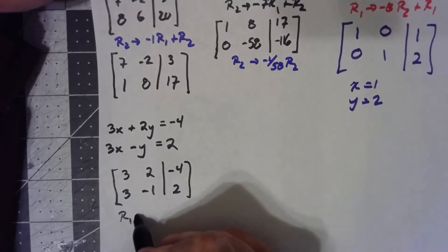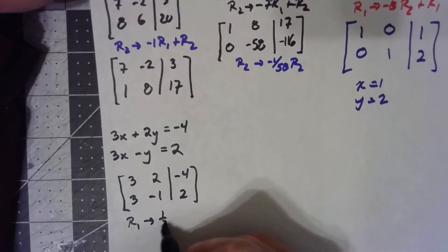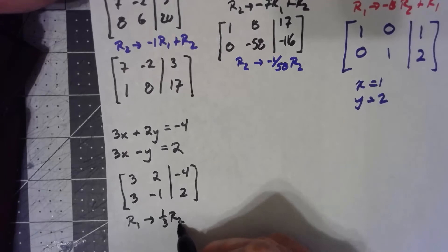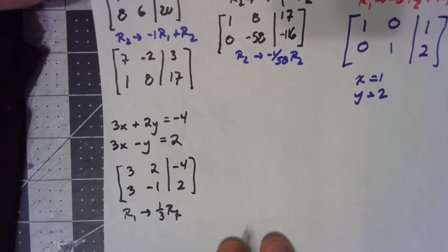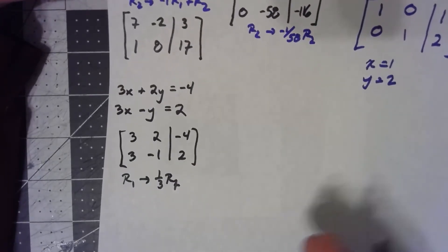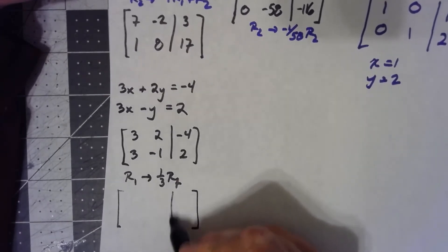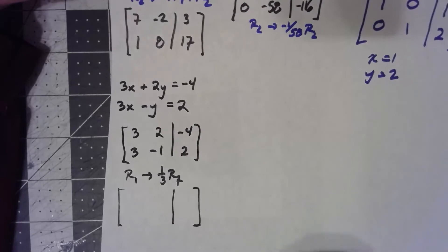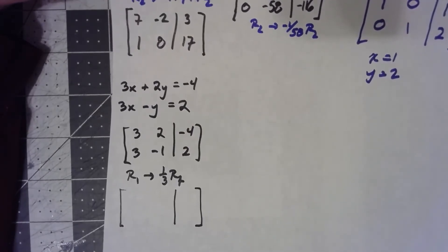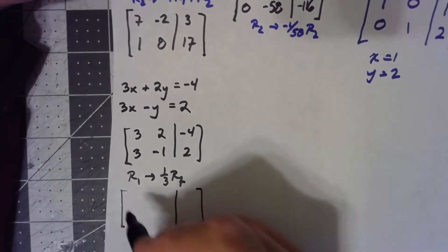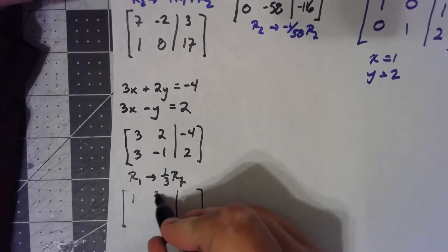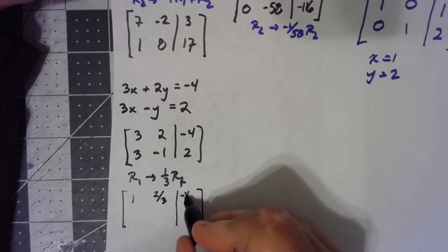And then to get that 1 in the upper left, I'll just go ahead and say row 1 is 1/3rd row 1. I don't like doing this if I can avoid it, which is why I always try to. But this does always work. No matter what, multiplying by the reciprocal could get you a 1. You just then have to deal with fractions from there on out. So I get a 1, a 2/3rds, and a negative 4/3rds.